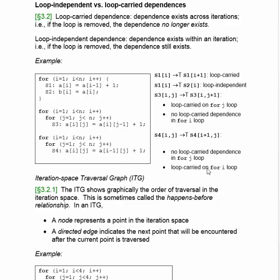For a loop-independent dependence, the dependence exists within an iteration, so if you take out the loop, the dependence would not change at all — it would still be there.